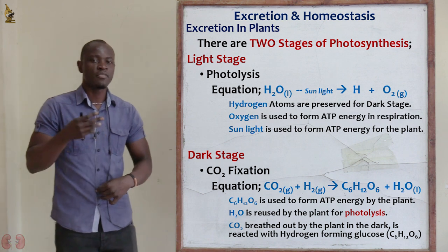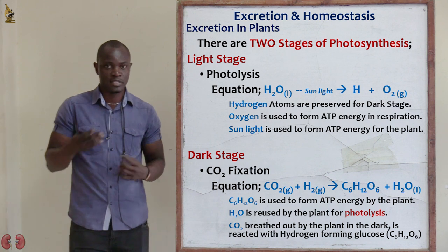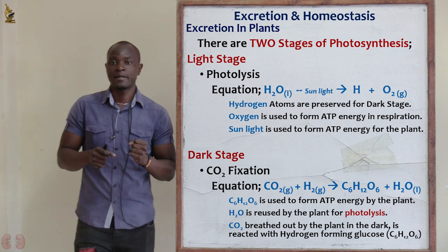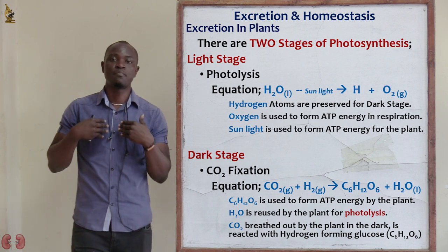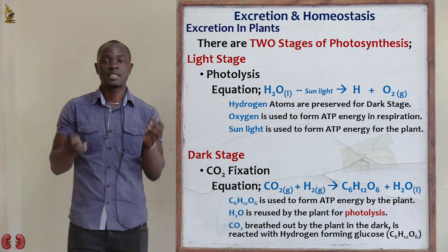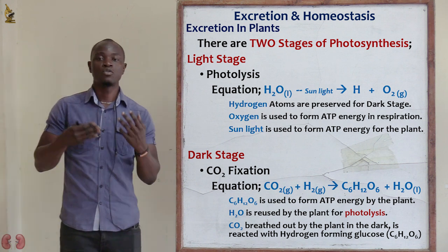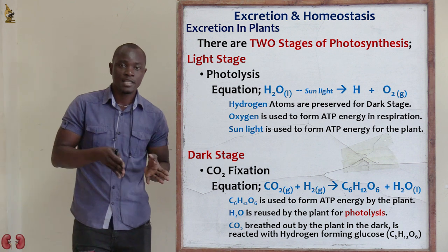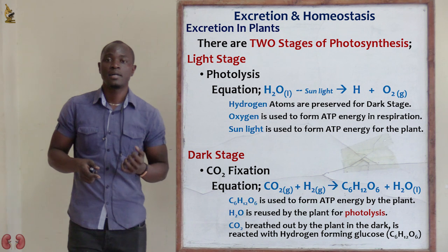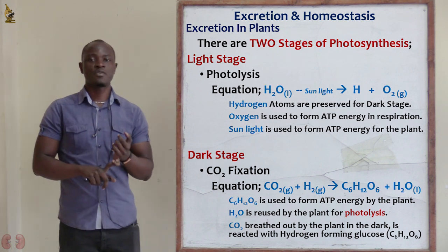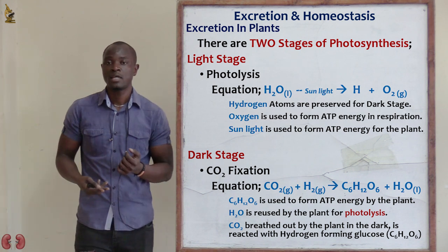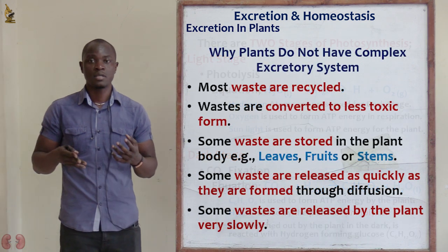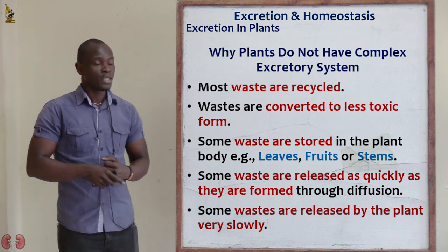Apart from oxygen, the plant also uses carbon dioxide. In the dark stage, carbon dioxide exhaled by the plant is recycled and reacted with hydrogen from the light stage to form simple sugar — glucose. So both oxygen and carbon dioxide are recycled by the plant, demonstrating why a complex excretory system is not needed.